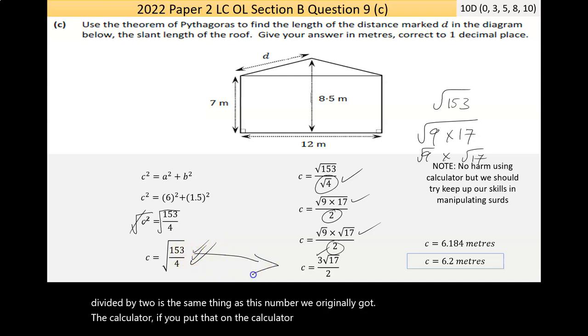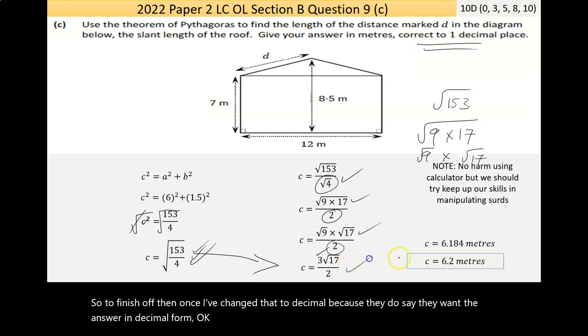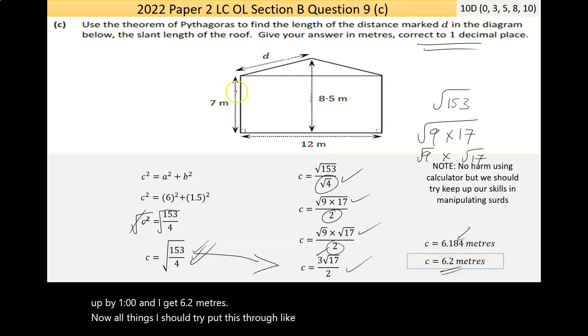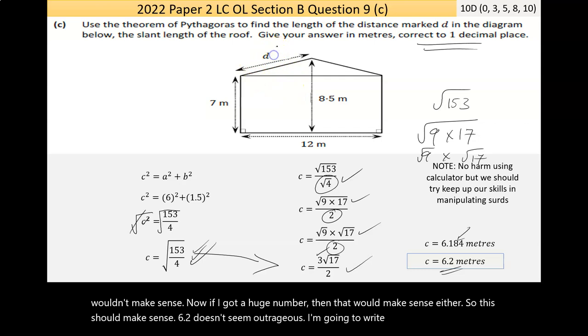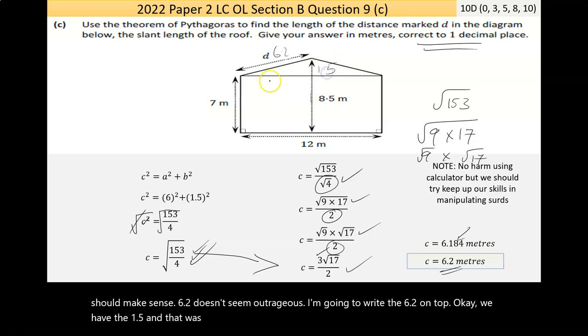The calculator would bring you directly to this answer, then you could press the SD button to turn that into a decimal. Once I've changed that to a decimal, because they want the answer in decimal form, not fraction form, it's longer in the calculator but I only need one decimal place. The second decimal place is what matters. That number is bigger than 5, so the digit prior rounds up by 1, and I get 6.2 meters. I should try to put this through common sense. This is 6 meters, so how could that be 1? It must be slightly longer than this. If I got a huge number, that wouldn't make sense either. 6.2 doesn't seem outrageous. That was probably the hardest thing to realize: this is the halfway point.